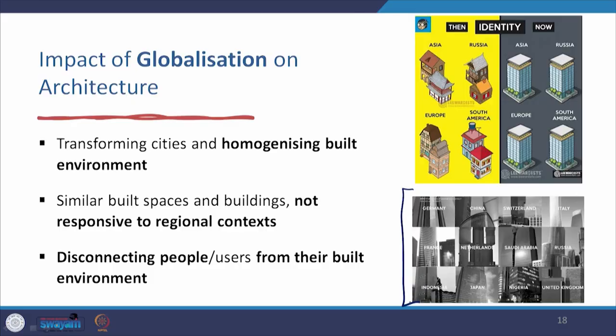For example, one symbol of modern architecture all over the world is the tall glass-and-steel building. Whether you look at Germany, Netherlands, Japan, or Indonesia, it all looks so similar. Today, you can build such a building in the Middle East, Europe, or India, because we can actively control the indoor climate of the building and do not need to depend on external climatic conditions. So whether in the hot Middle East or cold Europe, we have neutralized climate — it all looks the same.